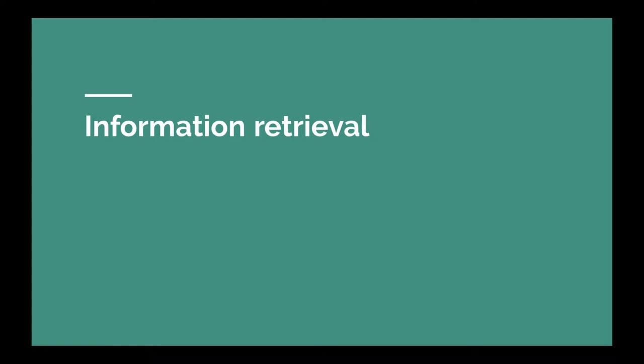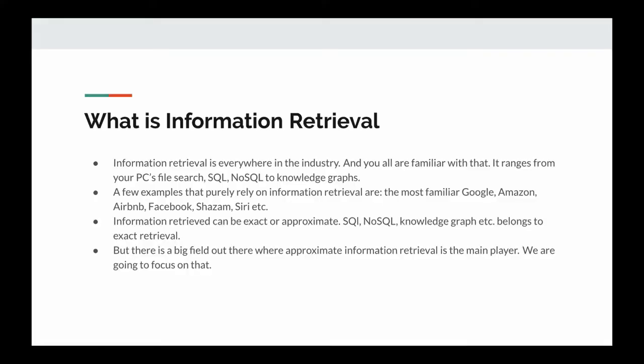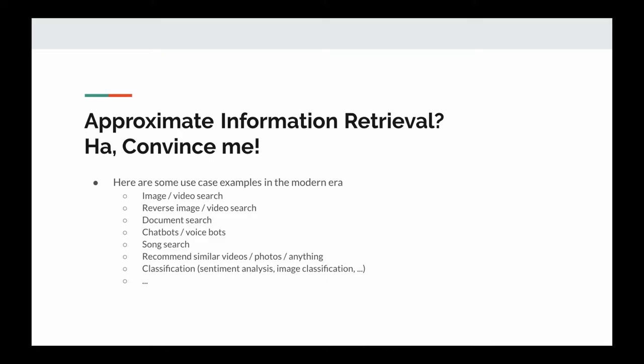In the next session we will be exploring what information retrieval means and how modern information retrieval can be done with the help of neural networks and vector databases like AquilaDB. Information retrieval is everywhere in the industry — it ranges from your PC's file search, SQL, NoSQL, to knowledge graphs. The information retrieved can be exact or approximate. In the case of SQL, NoSQL, and knowledge graphs the information retrieval is exact because a query must be satisfied, but there is a big field where approximate information retrieval is the main player.